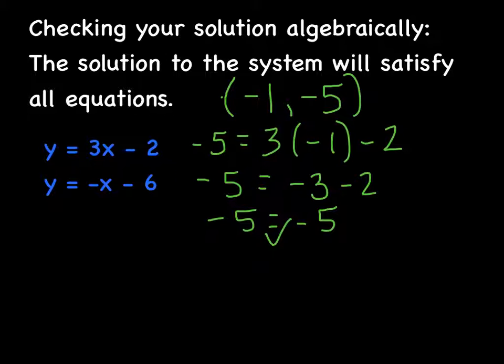Now let's go ahead and check the next one. I'll use a different color. -5 = -(-1) - 6. So -5 = 1 - 6. Got ahead of myself, negative 6.